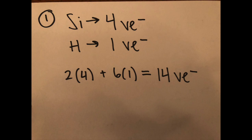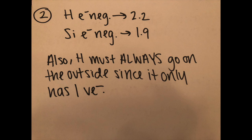And so the first step is going to be to determine how many valence electrons we have. So silicon is going to have four valence electrons because it's in group 4A. Hydrogen is going to have one valence electron because it's in group one. And then we're going to sum that up so 2 times 4 plus 6 times 1 equals a total of 14 valence electrons.